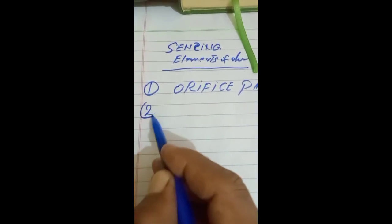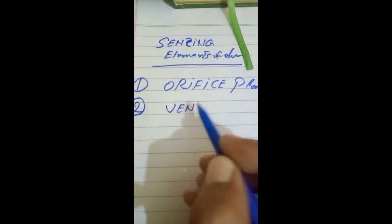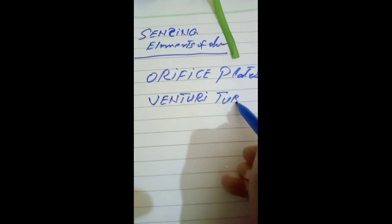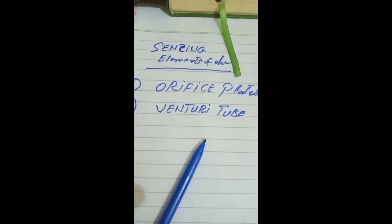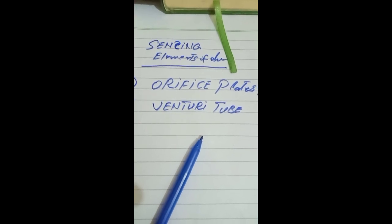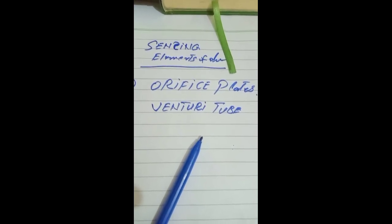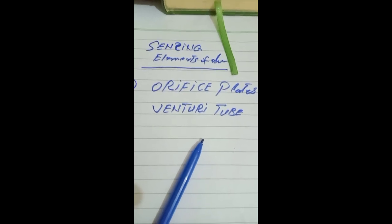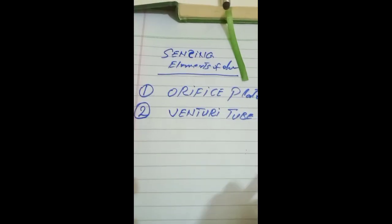Our second flow sensing element is the venturi tube. A venturi tube is a device where the flow rate in a pipeline is measured by narrowing a part of the tube. That is called a venturi tube. This is the definition of the venturi tube.